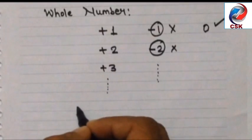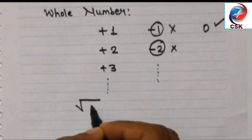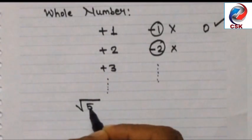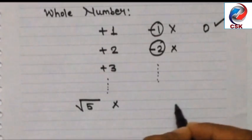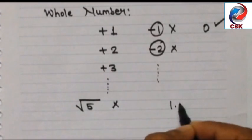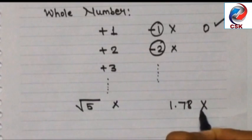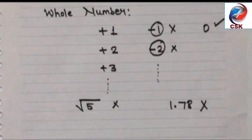Now let's consider a number root 5. Root 5 will always contain a decimal number, so any number which contains a decimal can never be a whole number. 1.78, exponential e, pi, all these can never be a whole number.